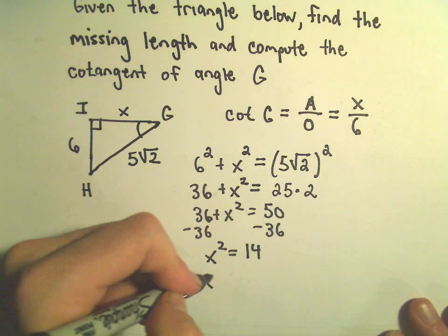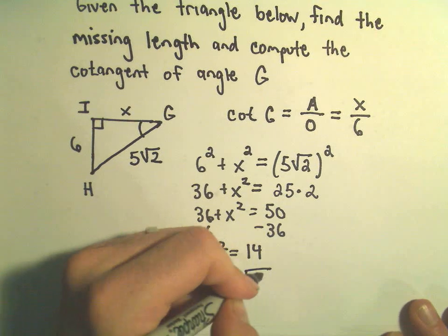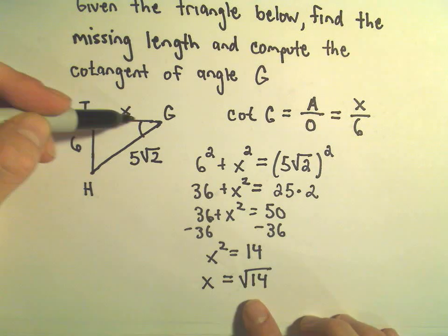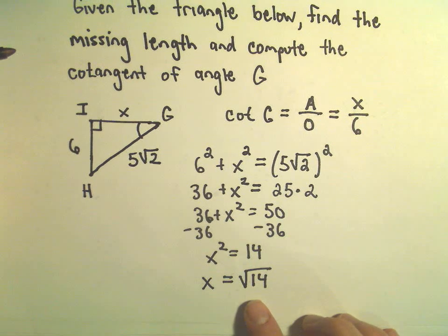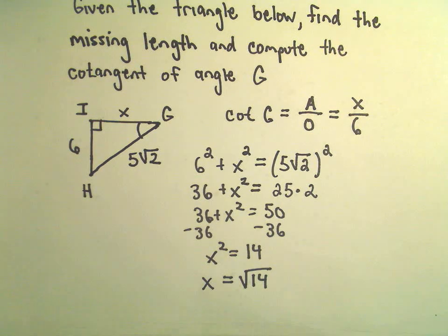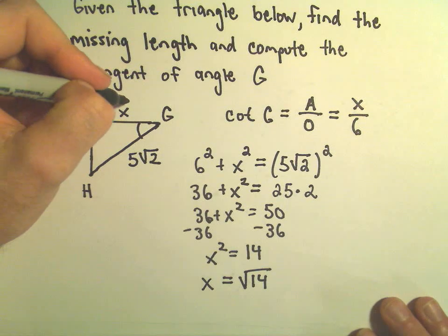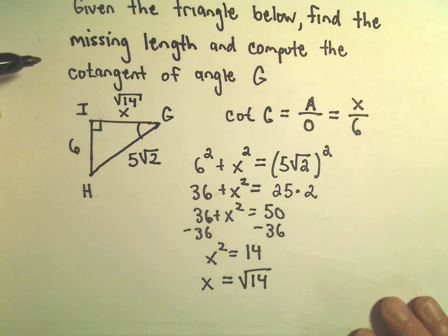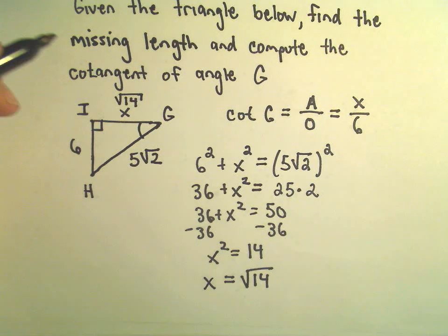And now we can simply take the square root of both sides. Again, you normally get positive and negative, but x here is going to have to be positive because it's the length of a triangle. You could factor 14 as 2 times 7, but that doesn't really break down any further. So I'm just going to leave that as the value square root of 14. So now we're pretty much done.